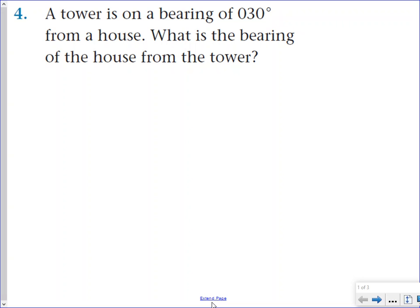We have a tower is on a bearing of 030 degrees, so it's basically 30 degrees. Remember these bearings, or true bearings, they're always three digits. So that means we just put a zero in front of it if it's a two-digit number. So from a house, what is the bearing of the house from the tower? So it's what is the bearing of the house from the tower, starting from there to the house. So what we want to do with these bearing questions, the best thing to do is go ahead and start by drawing a compass.